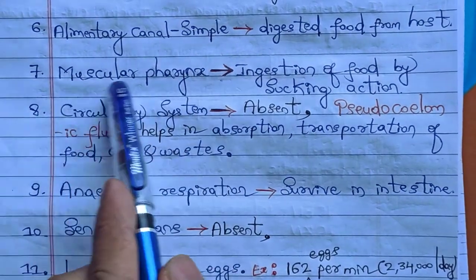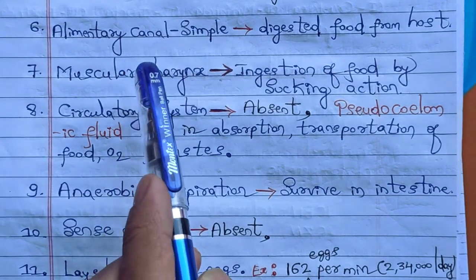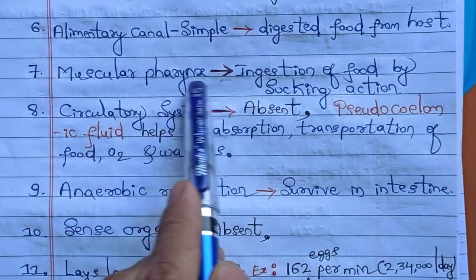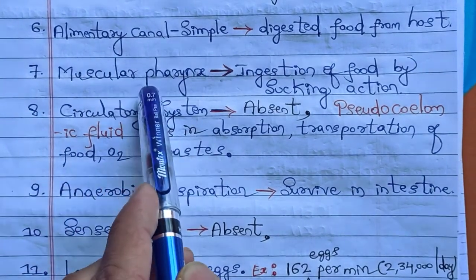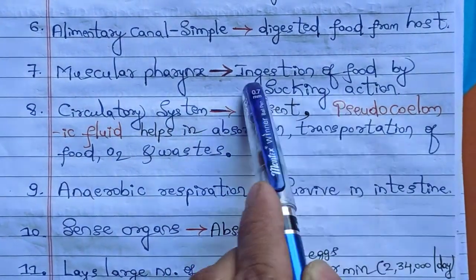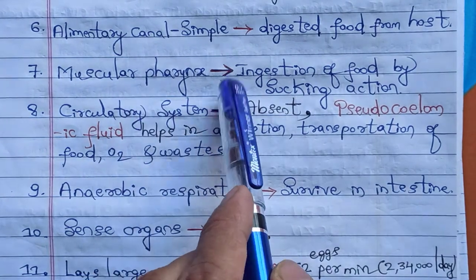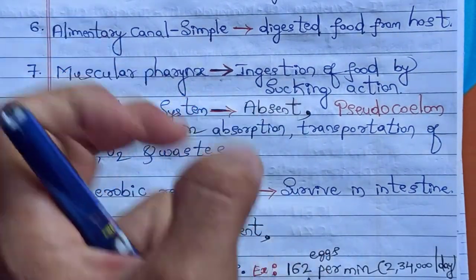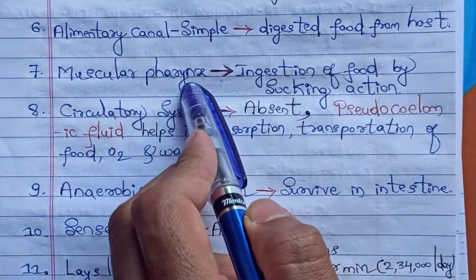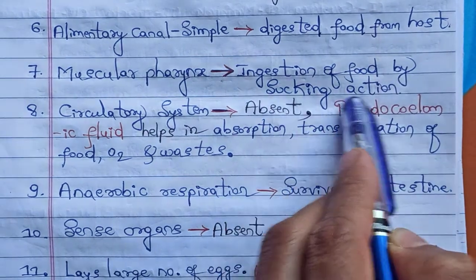Ascaris has a muscular pharynx. The development of muscles in animals was first observed in Aschelminthes, and the pharynx is highly muscular, made up of different types of muscles. This muscular pharynx helps in ingestion of food — intake of food — by a sucking action, acting as the organ of ingestion.